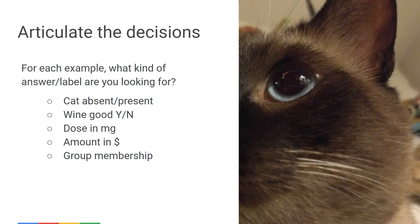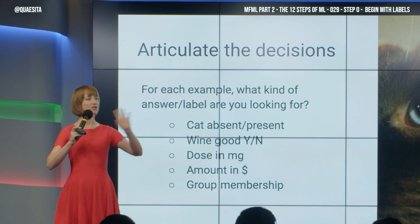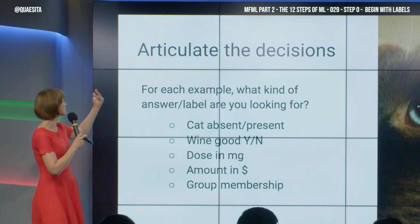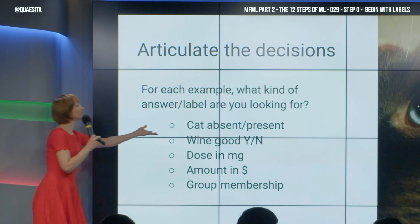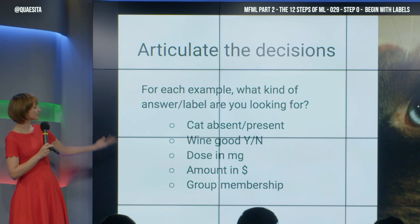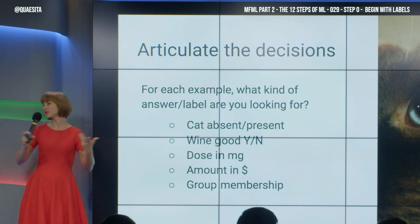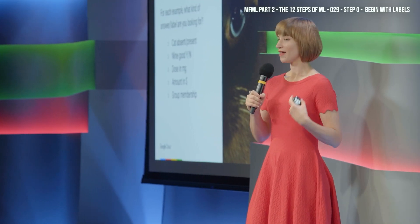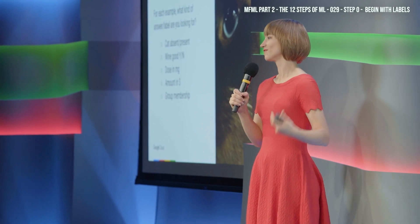Articulate the decisions that you want coming out of the system when it is fully operational. You don't need any specialized experience to do this — just imagine it's already functional and outputting some labels. What are these labels? Are they labels like cat or not cat? Is the wine good or not? Or maybe a dosage in milligrams, or an amount in dollars? What group does this thing belong to? The sort of label that you want is going to determine what kind of machine learning system you're looking for.